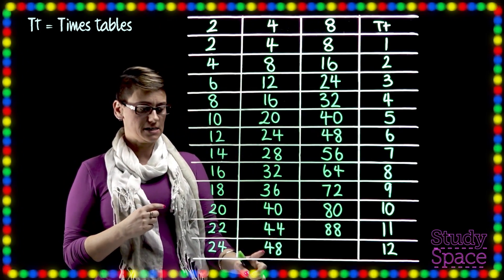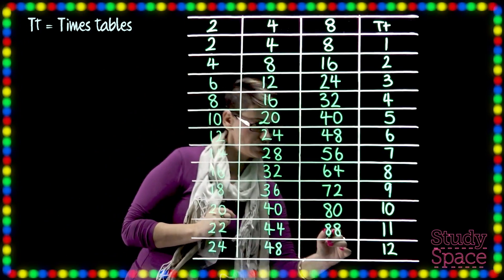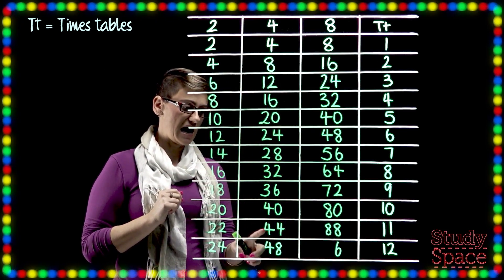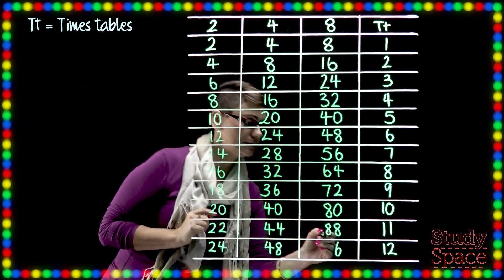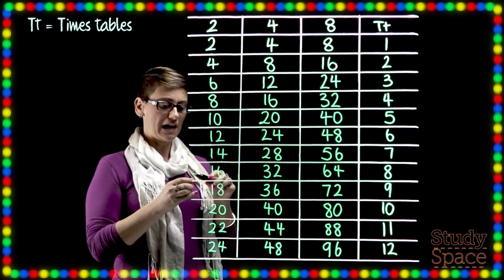Okay and double 48. Okay let's try that one. So 2 8's are 16. So we'll write the 6. Plus 2 4's is 8. Plus the one we carried is 9. Okay. Alright. So there are all our doubling.